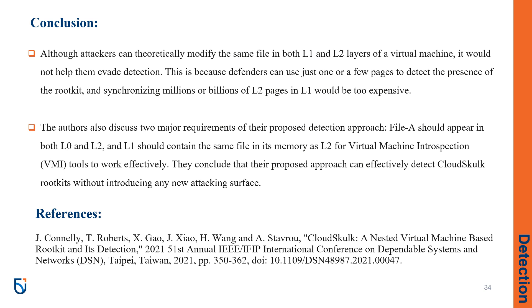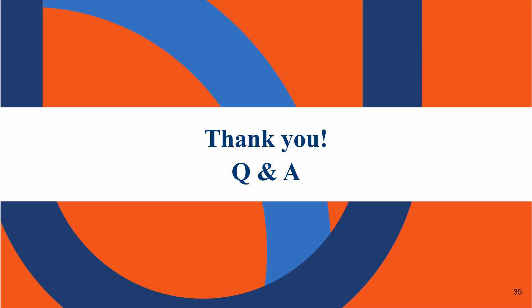The authors also discuss two major requirements of their proposed detection approach: file A should appear in both L0 and L2, and L1 should contain the same file in its memory as L2 for virtual machine introspection tools to work effectively. They conclude that their proposed approach can effectively detect CloudSkulk rootkits without introducing any new attacking surface. Thank you for joining us today, and we look forward to any further discussions we may have.